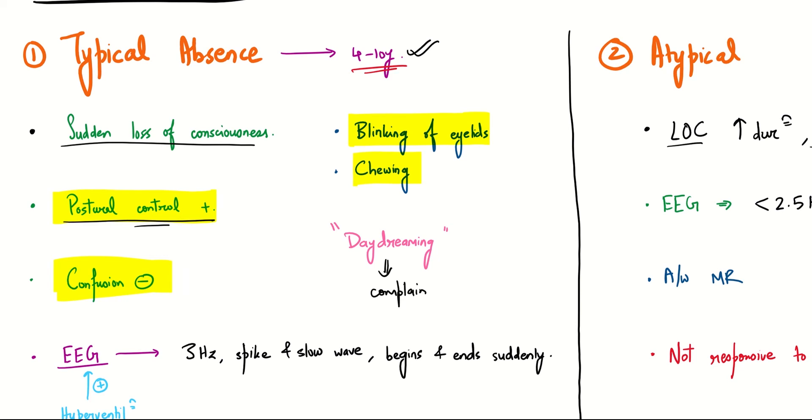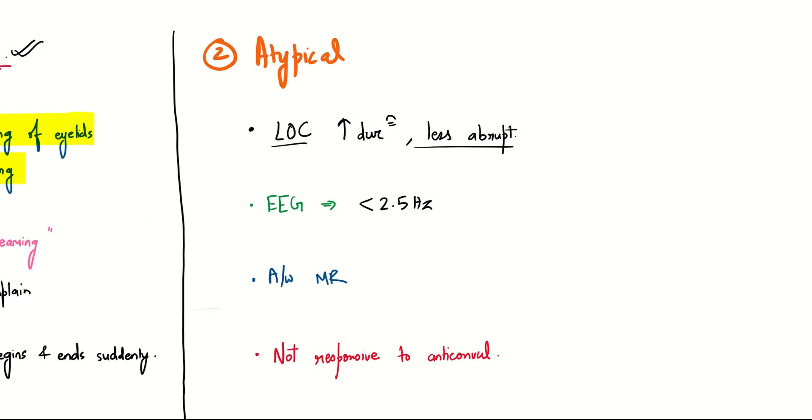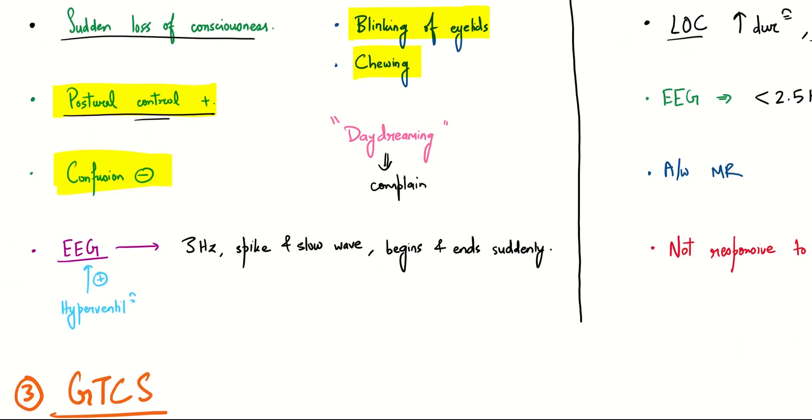EEG in absence seizure will be a typical 3 Hz spike and slow wave pattern which will begin and end suddenly. To get such an EEG, we generally hyperventilate the patient, after which we get such a pattern if he or she has absence seizure.